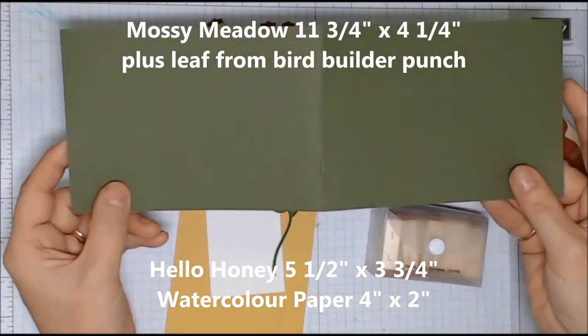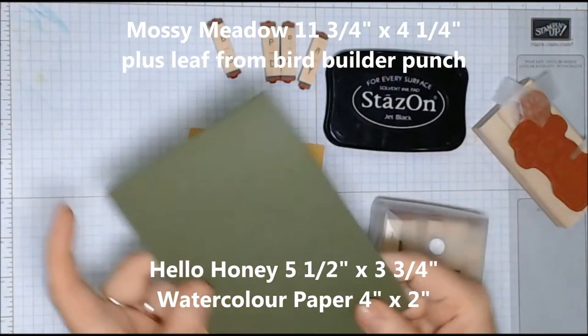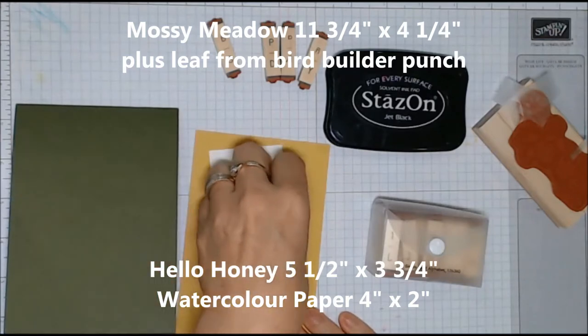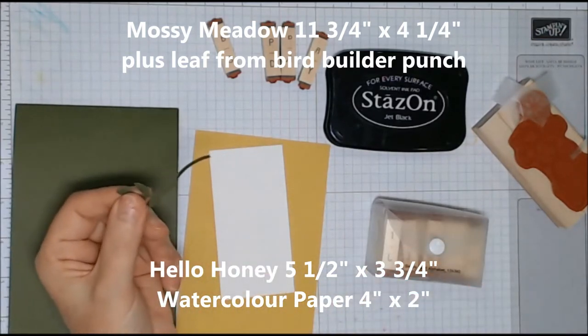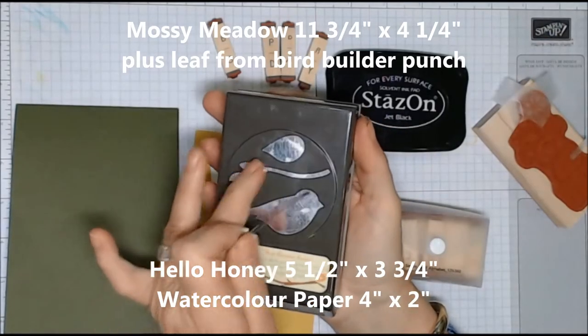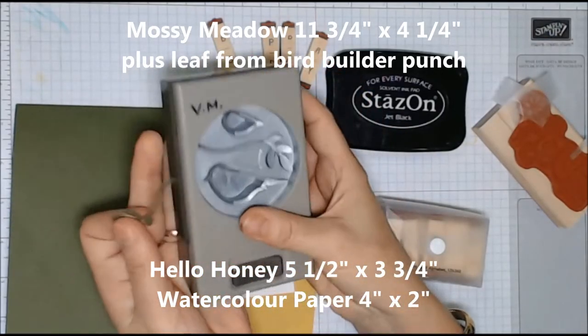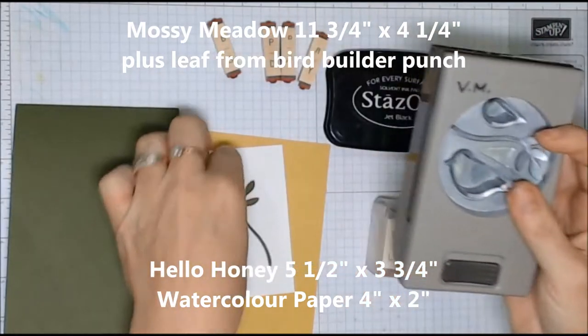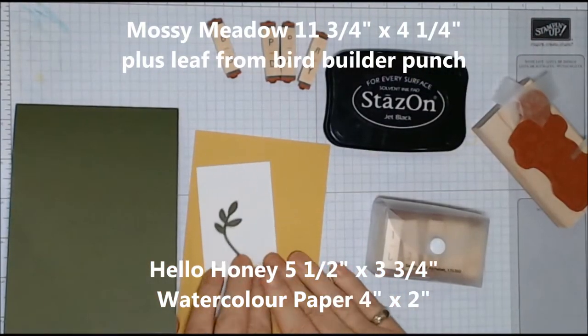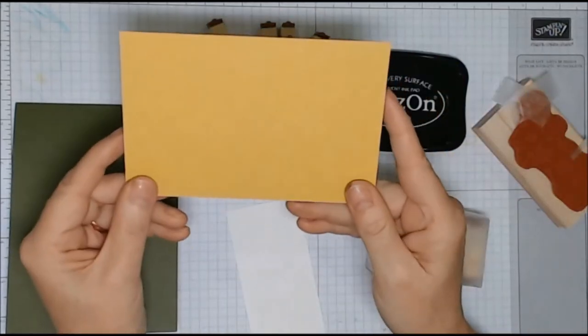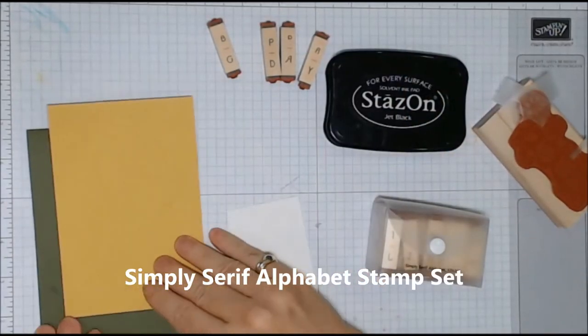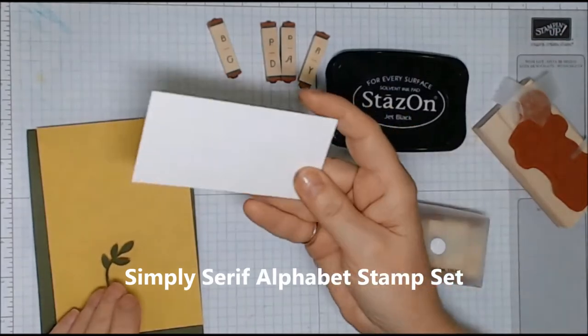Start with some Mossy Meadow cardstock, 11 3/4 by 4 1/4 inches. Then you're going to cut a leaf with a bird builder punch. Take some Hello Honey and use that as your layer, cut to 5 1/2 inches by 3 3/4 inches. A watercolour paper piece will be 2 inches by 4 inches. You do need to use watercolour for this because we'll be colouring it with the aqua brush.